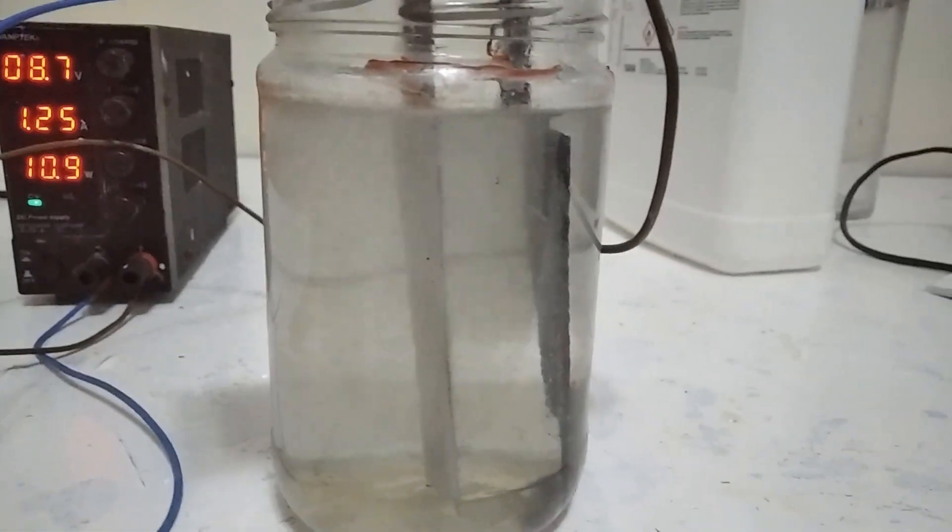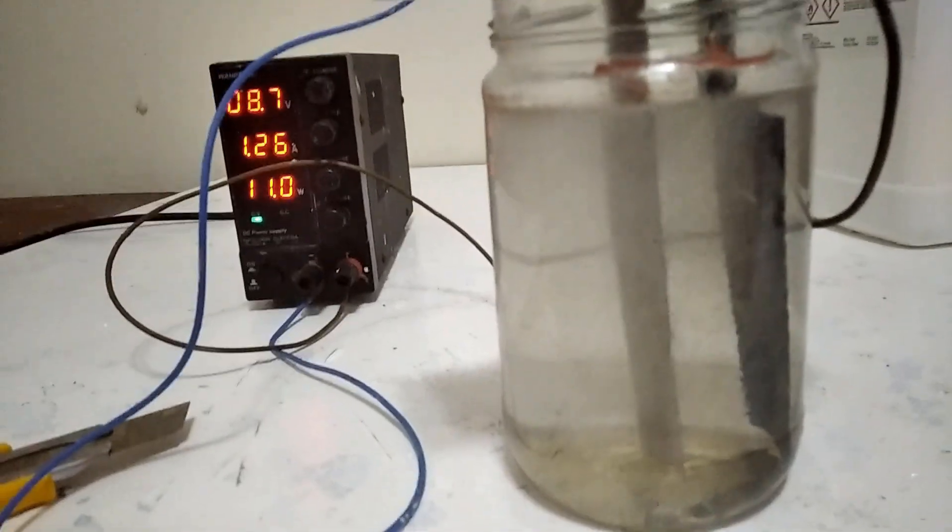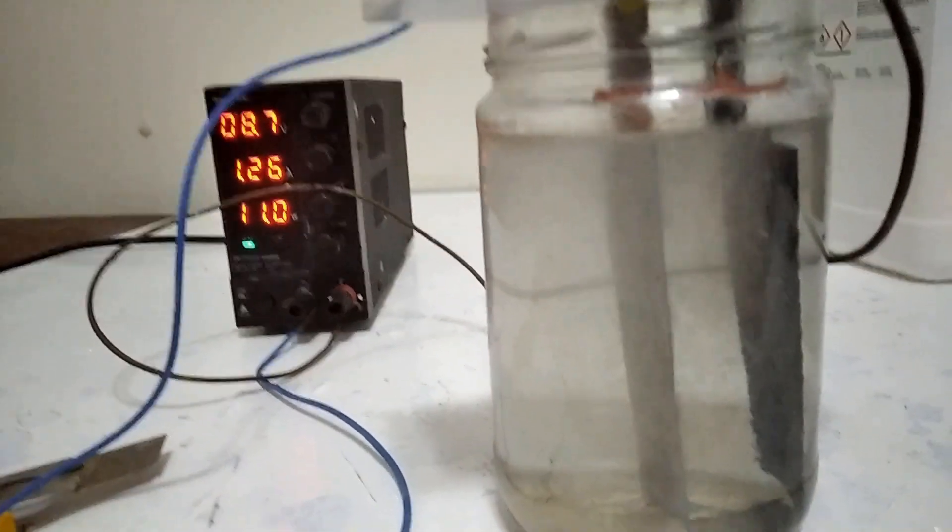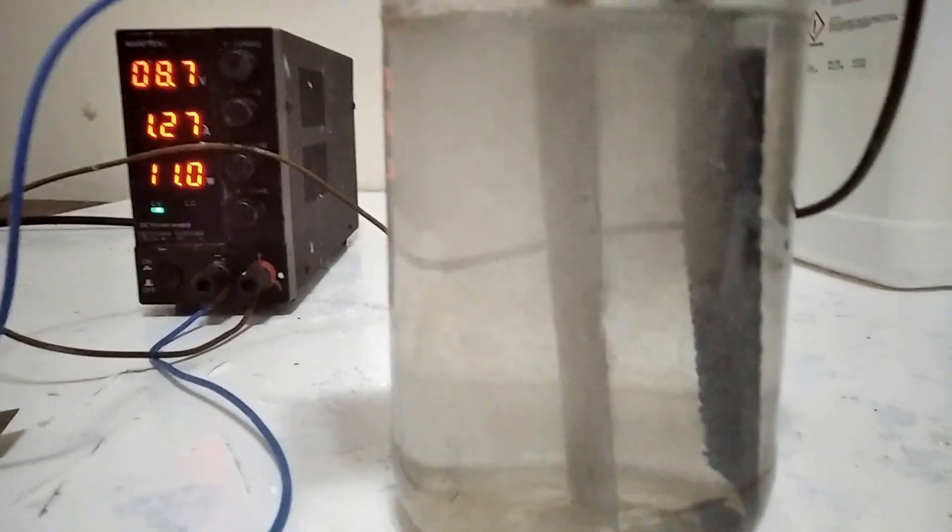Carbon dioxide is another product in this reaction. As you can see the amps are going up because we're running at constant voltage. You notice that there is a cloudy layer coming in. I think that is magnesium carbonate.